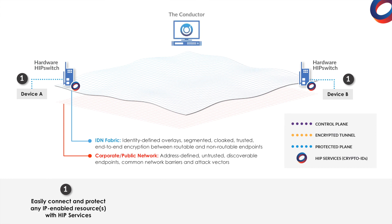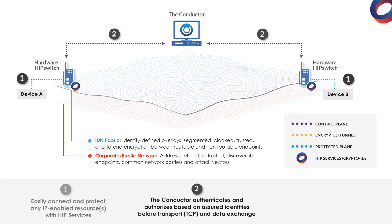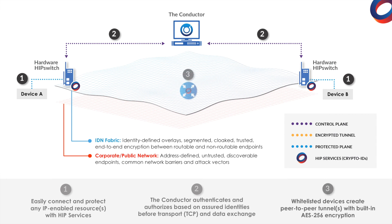Step 2: the conductor authenticates and authorizes the HIP services via their assured host identities before initiating the data exchange, and then whitelists both HIP switches to communicate with each other through point-and-click policy creation. Step 3: after being whitelisted for communication, the HIP services build a tunnel between them for peer-to-peer encrypted connectivity.